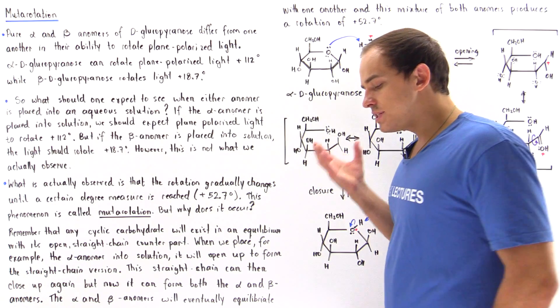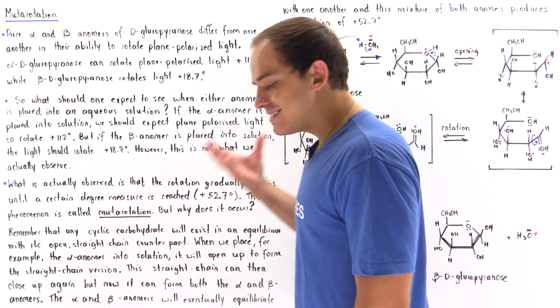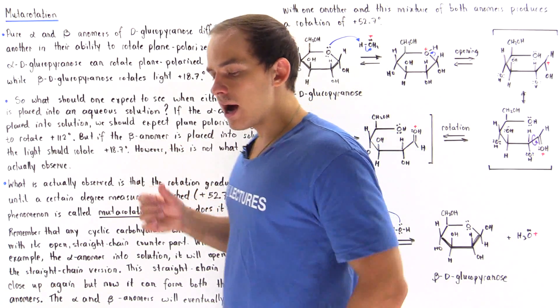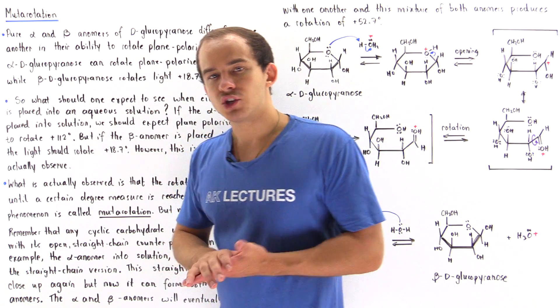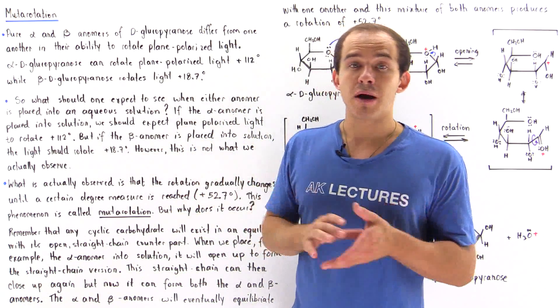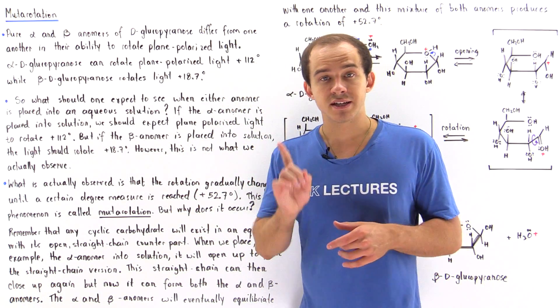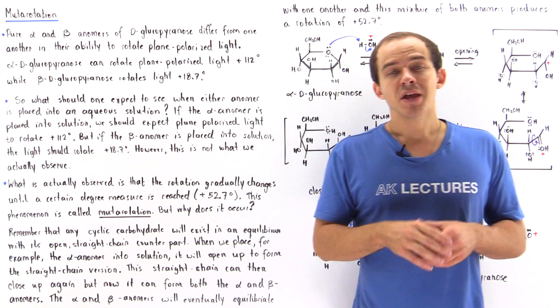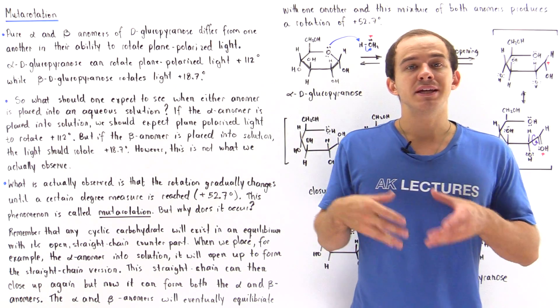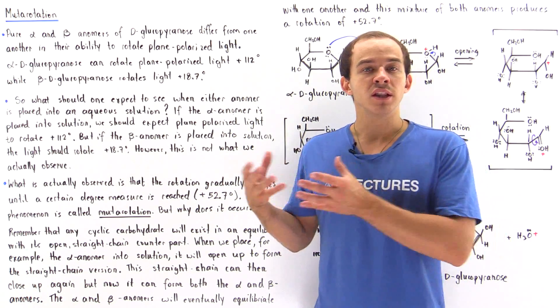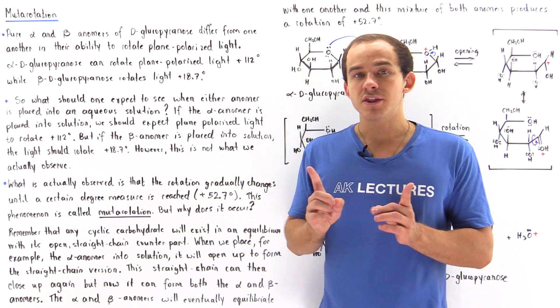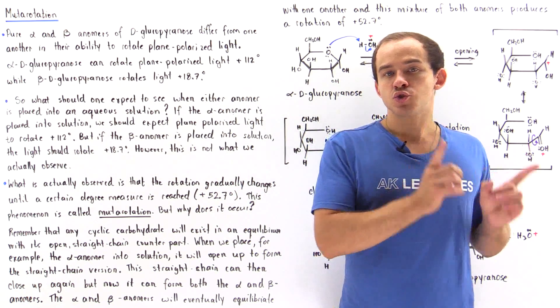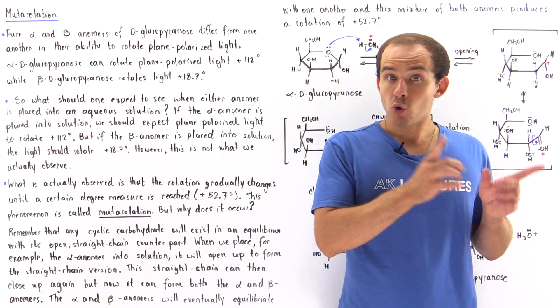Remember, whenever we take any cyclic carbohydrate molecule — any sugar molecule in its cyclic form — it will begin to equilibrate with its straight-chain, open form.